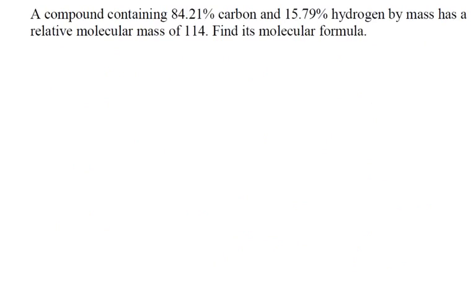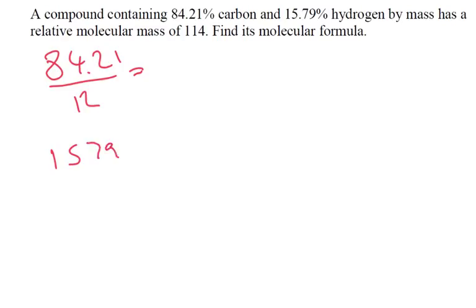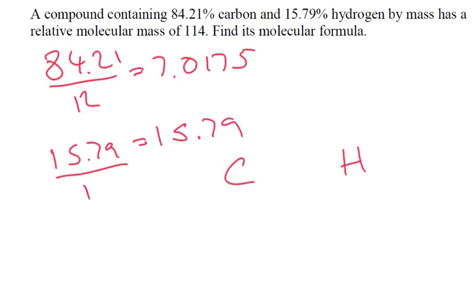A compound contains 84.21% of carbon and 15.79% of hydrogen by mass, and it has a relative molecular mass of 114. Find the molecular formula. Same as always — find out how many moles first. Hydrogen: 15.79 divided by 1 is 15.79. Carbon: 84.21 divided by 12 gives us 7.0175. So carbon = 7.0175, hydrogen = 15.79.